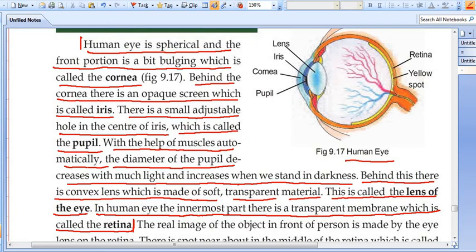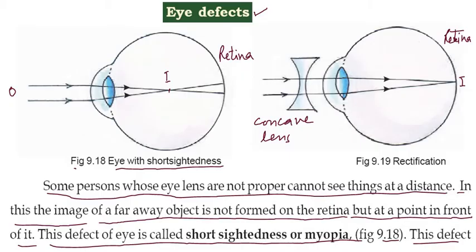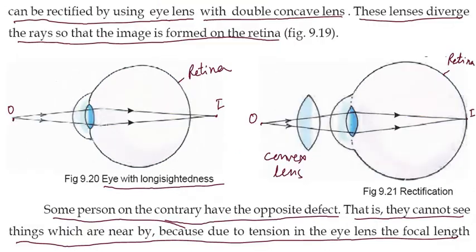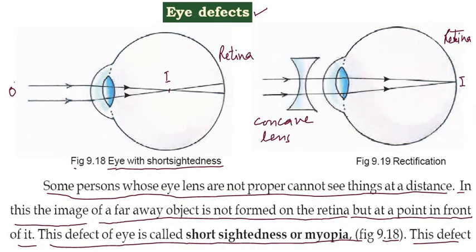For both short-sightedness and long-sightedness to be clear, in both cases you should learn what happens and where the image is formed — whether the image is formed in front of the retina or behind the retina. In both cases, understand where the object is placed and where the image is formed on the retina. If the image is not formed on the retina, then the object is not visible.